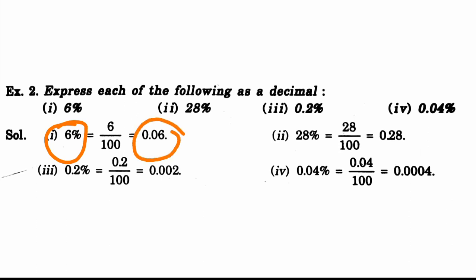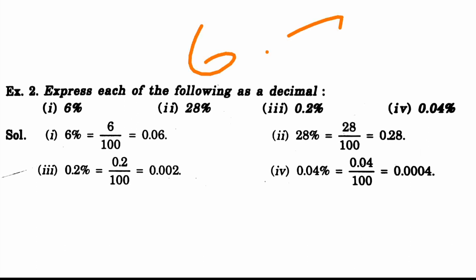Decimal is very simple. So if we take the point, it is 6.2. We have here 2.0. So if you take the point, it is 0.06.